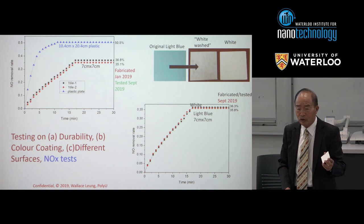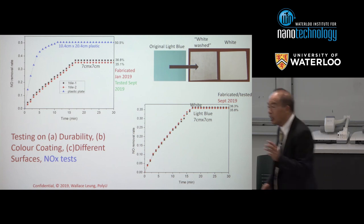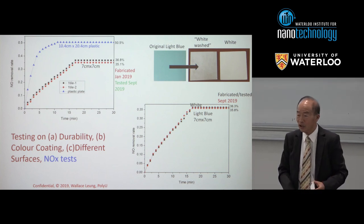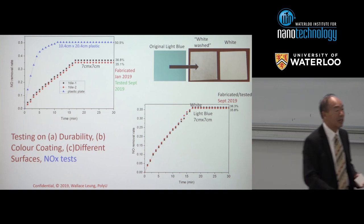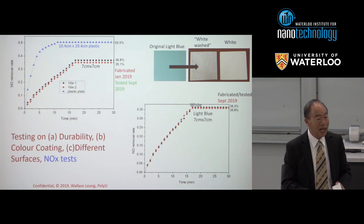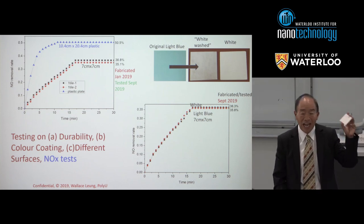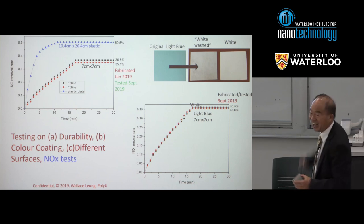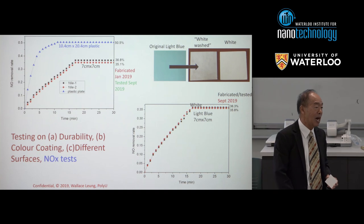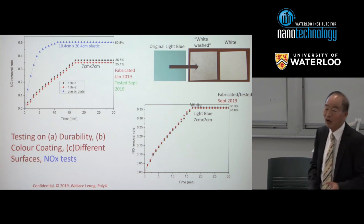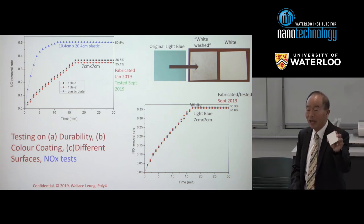I call it 'whitewash' because I saw whitewashed houses in Greece. One student painted it blue — after a day it turned white, because the strong oxidation power oxidizes the color away. Unfortunately, you have to start with white. You can apply this coating to glass, plastic, and other surfaces.